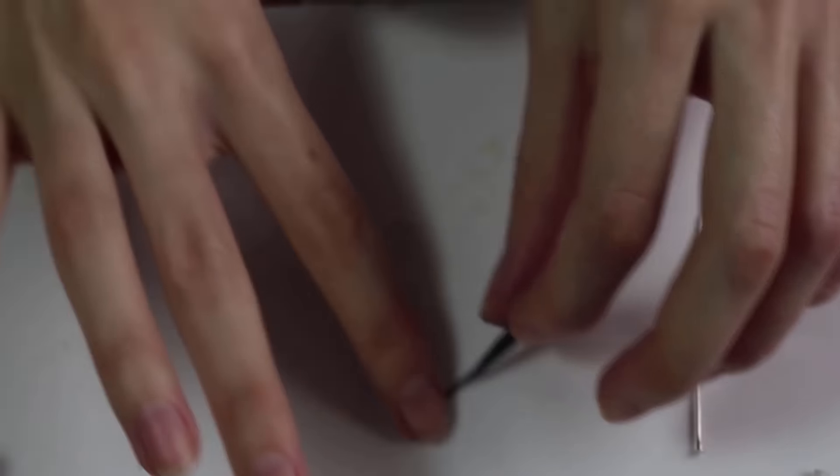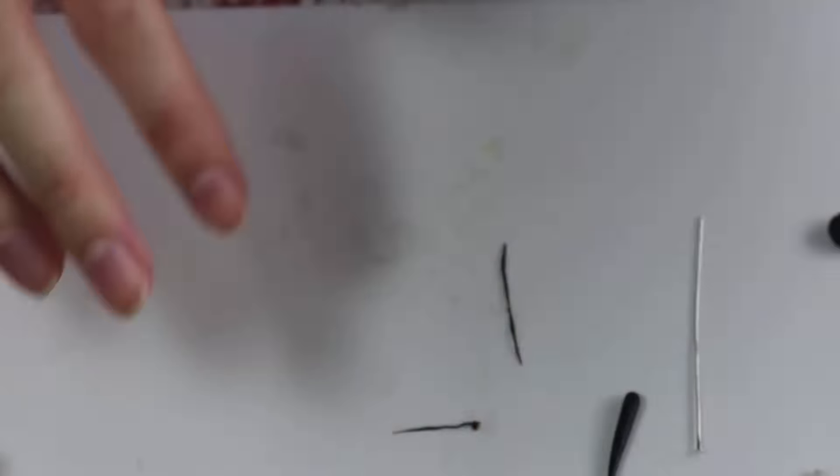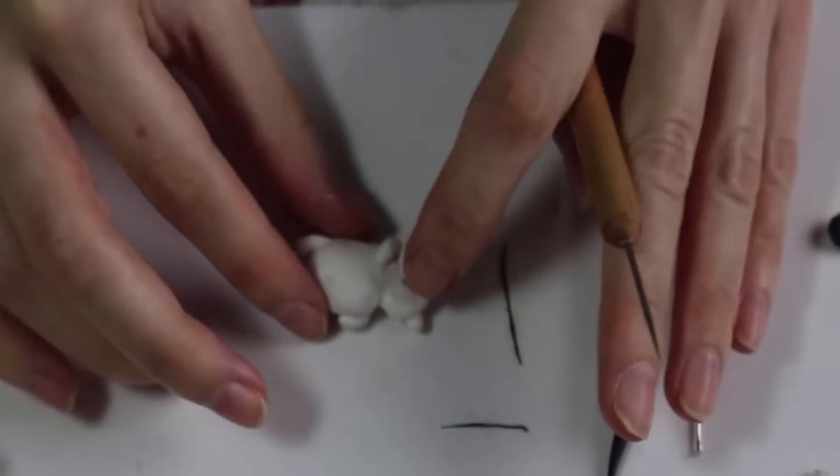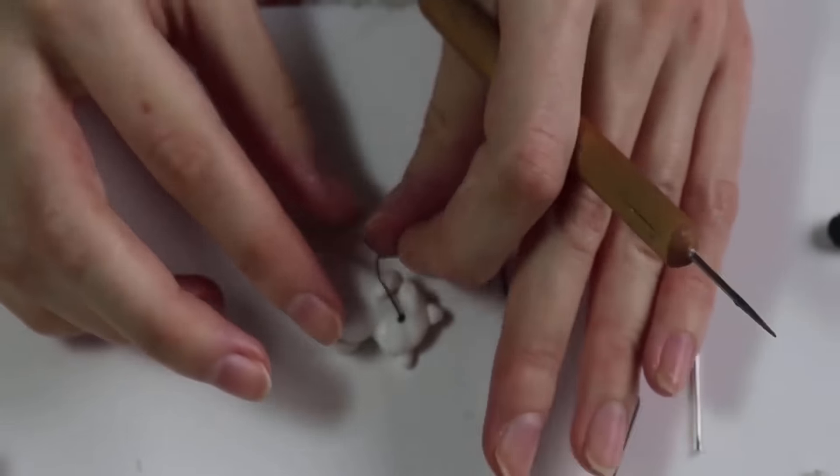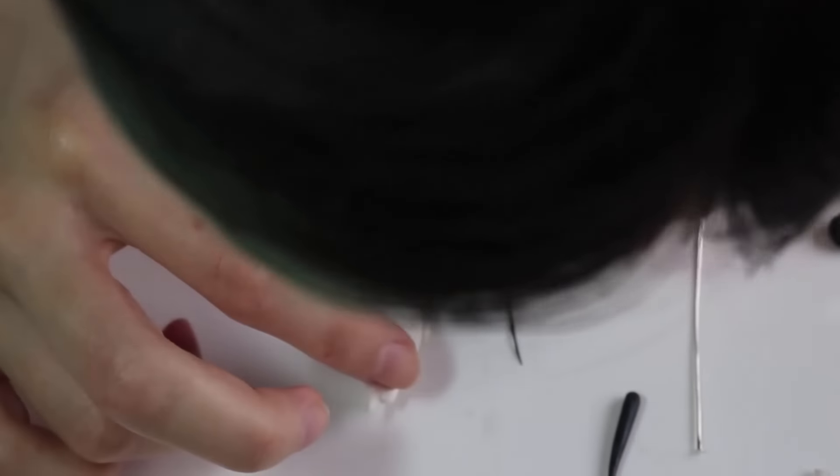So then from there I'm rolling out a really thin snake, and I'm going to be making his eyes and his nose, and his little mouth right now. So I like to start with the nose first, so that it can give you a really good gauge as to where to put the rest of the pieces of his face.